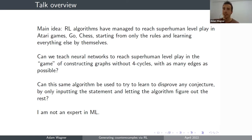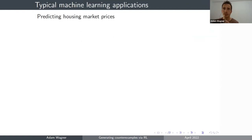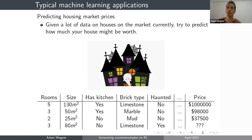Before we begin with RL, let me give you a quick overview of some typical applications of machine learning and contrast them with reinforcement learning. One of the most typical applications is making predictions — for example, starting with a large housing market database where you know how many rooms each house has, its size, and what price it sold at. You train an algorithm on this dataset, and once trained, you use it to predict the price of a new house.